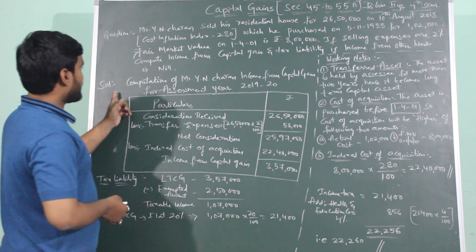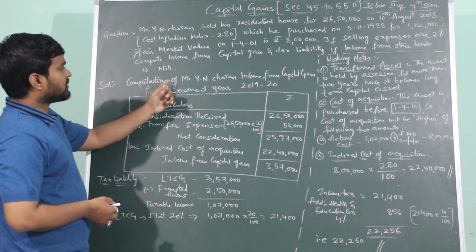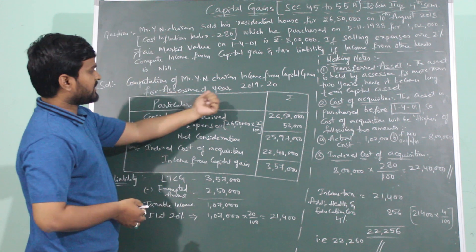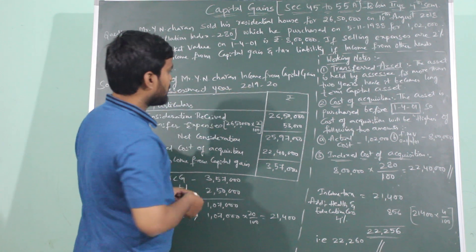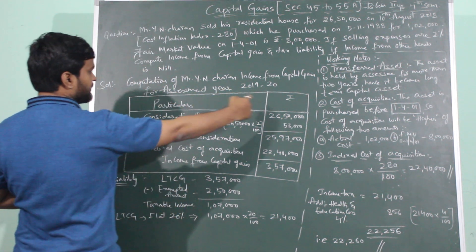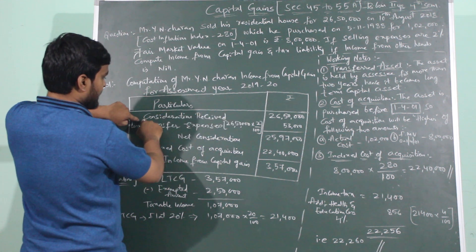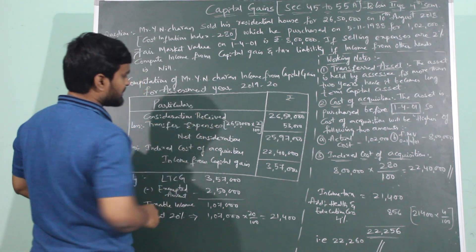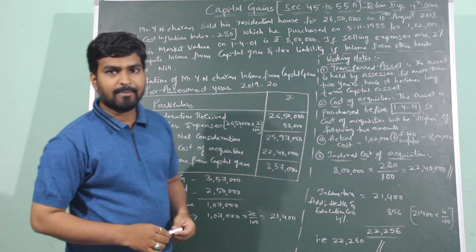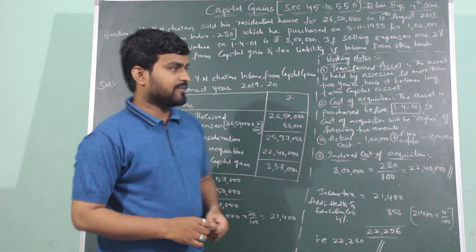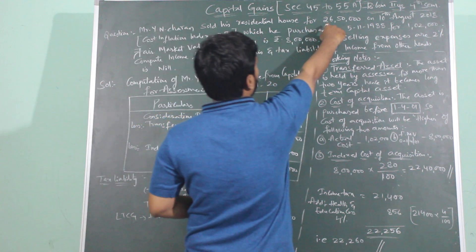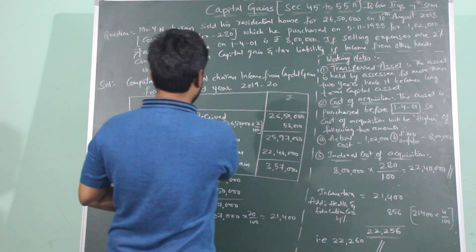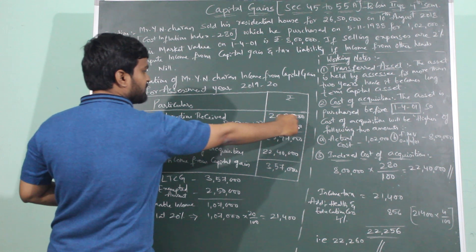Let us start the problem. Here is the computation of Mr. Y.N. Charan's income from capital gain for assessment year 2019-2020. Here is the format — particulars and amount. First, what we write is consideration received. Consideration received means the amount received from selling the capital asset. He is selling his residential house for 26,50,000, so this will be taken as consideration received: 26,50,000.